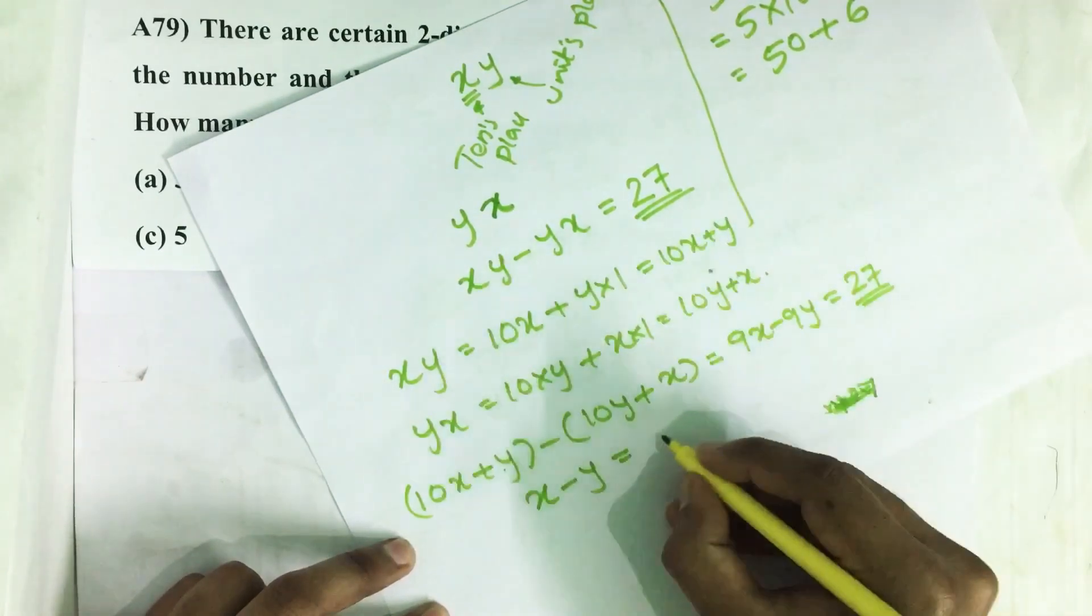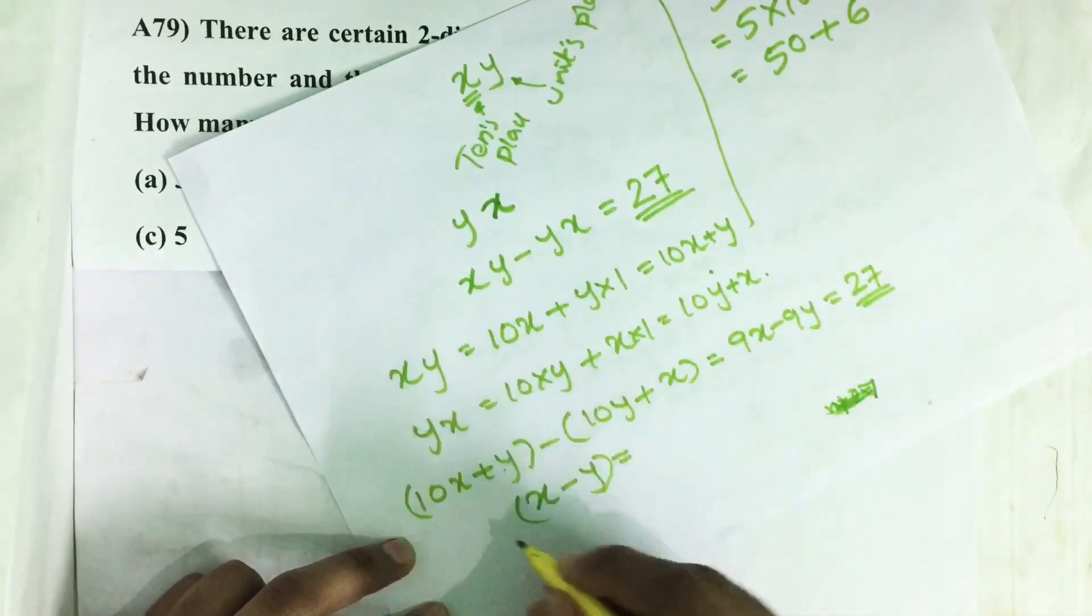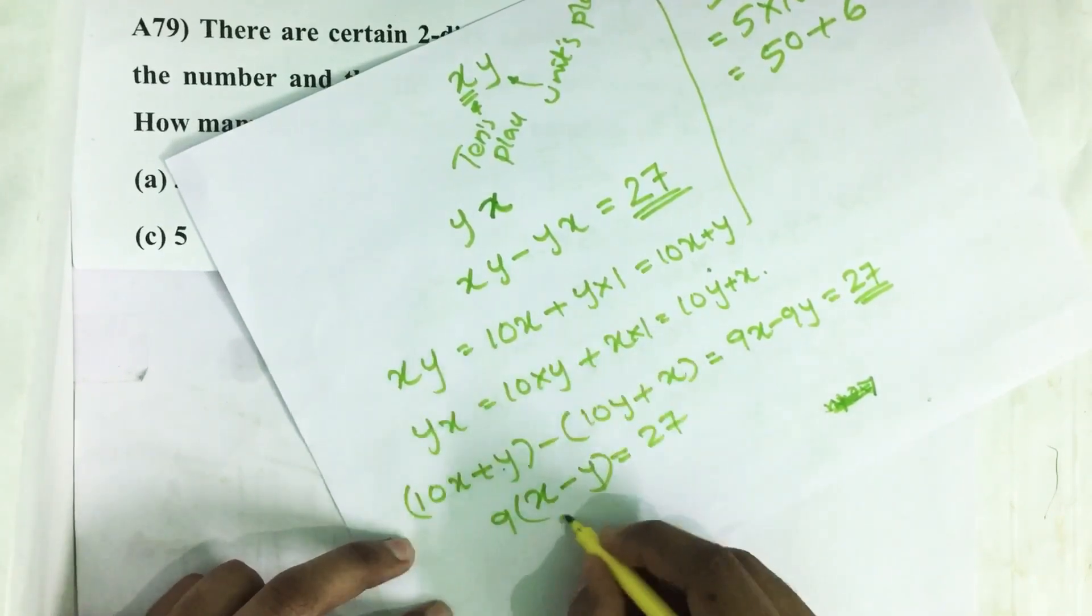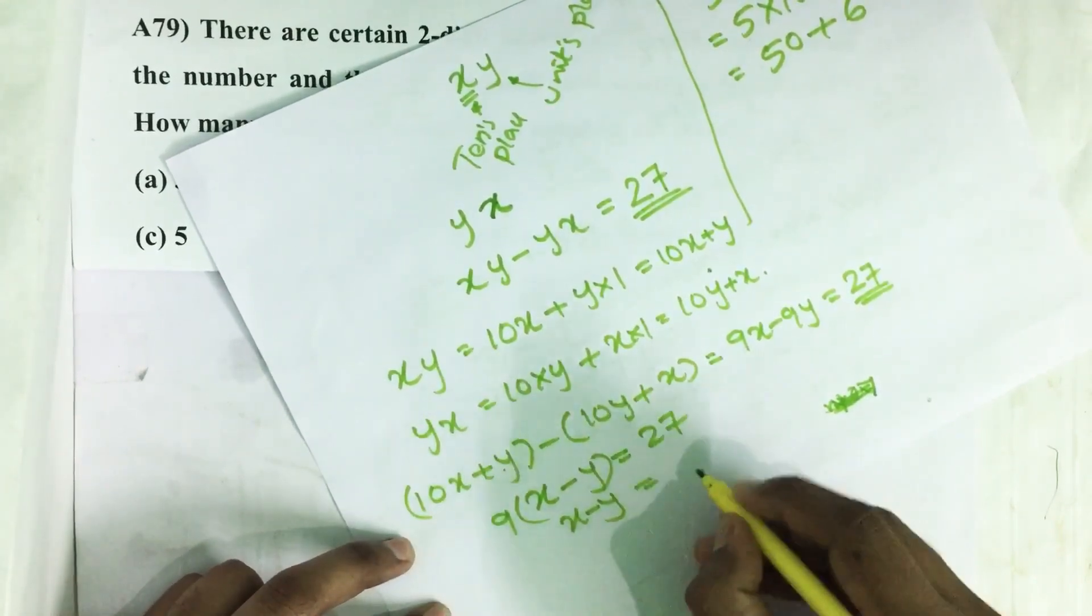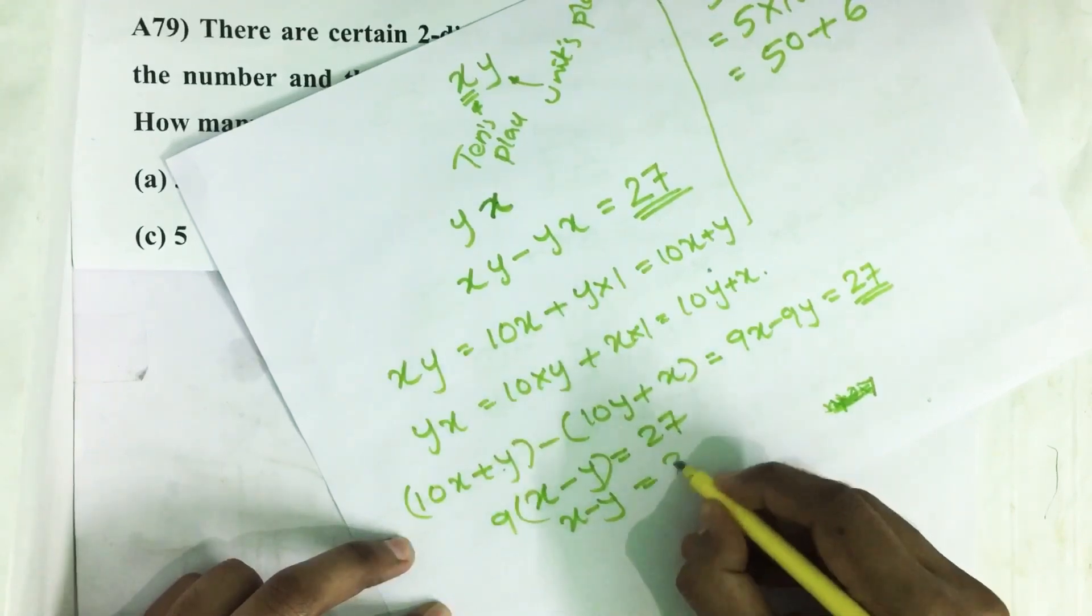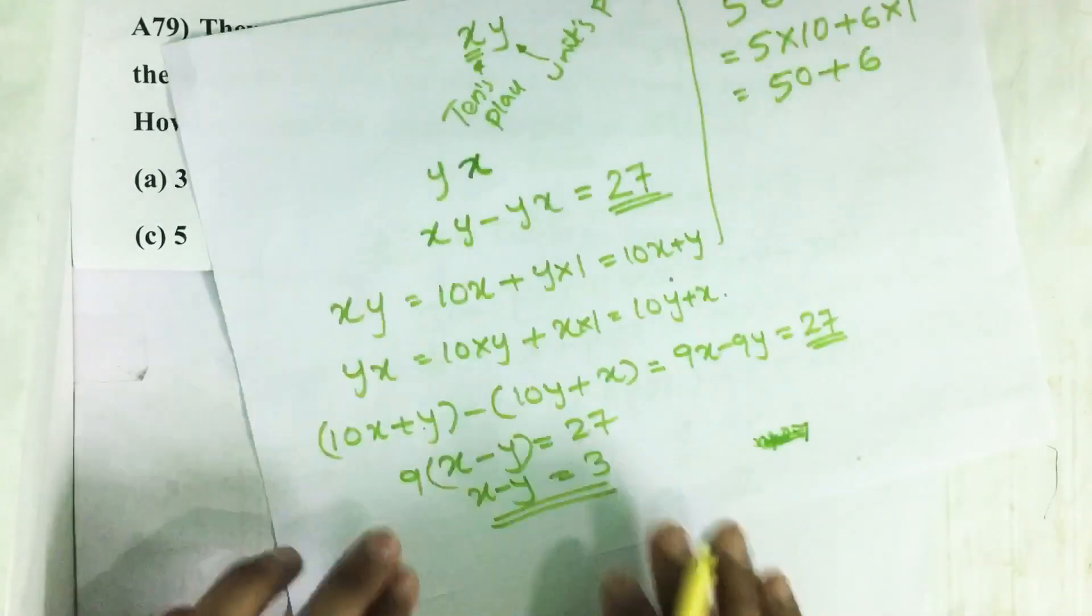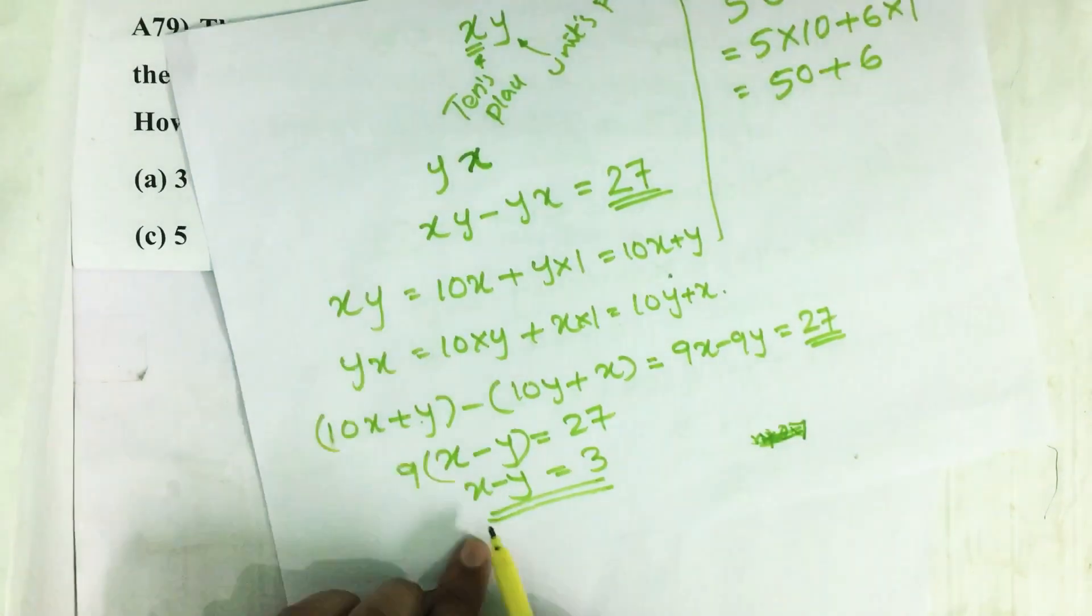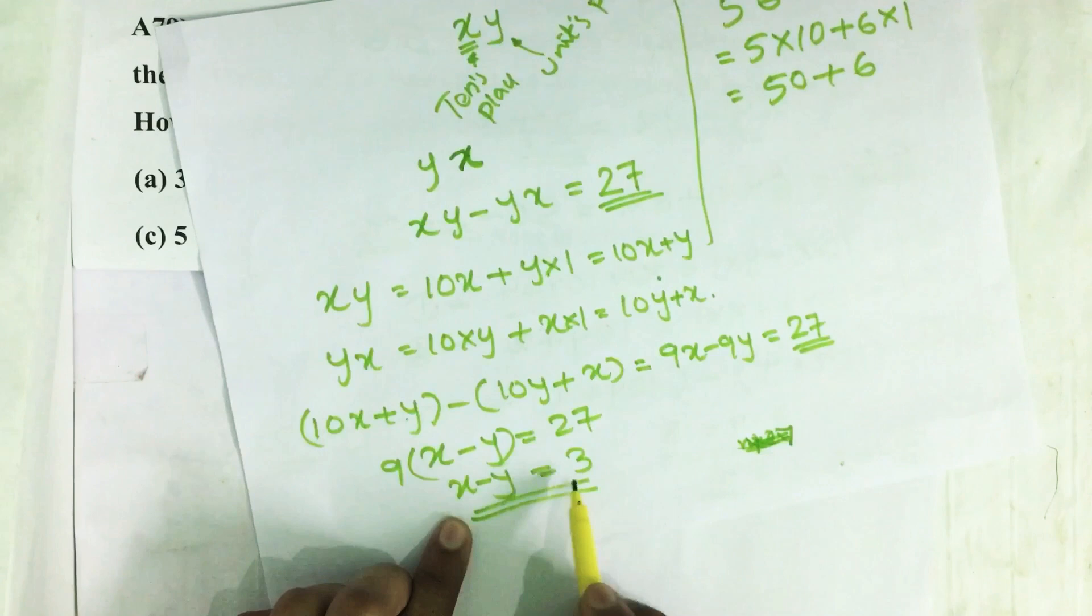I will write here 9 into X minus Y equals 27, then X minus Y equals 27 divided by 9 which equals 3. So whichever two-digit numbers have a difference between their digits of 3...